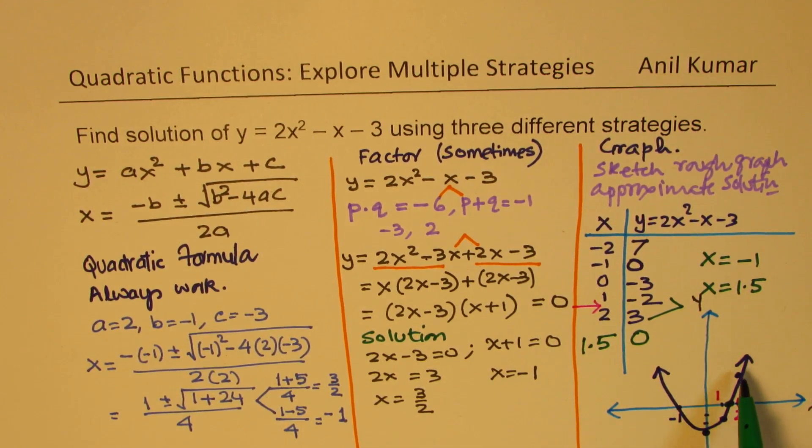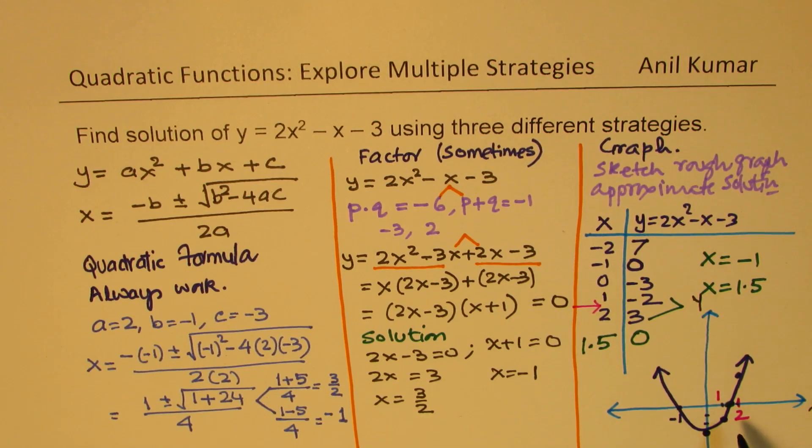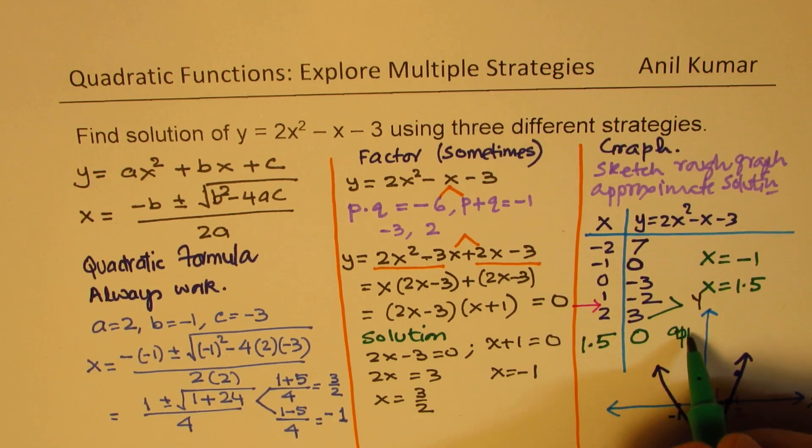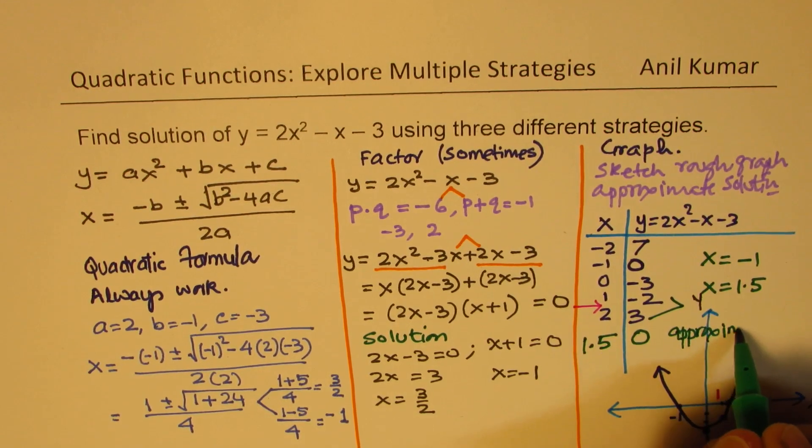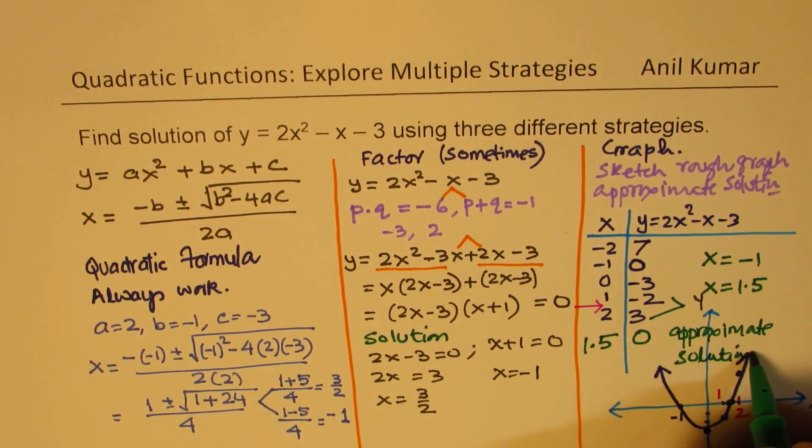So on an accurate graph, you could actually read this. However, as you have realized, graphing gives you approximate solution. So normally, we have approximate solution. Okay.